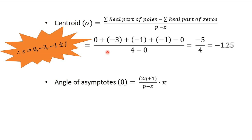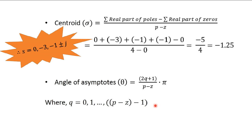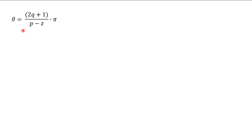Now we will find the angle of asymptotes, given by θ = (2Q+1)/(P−Z) × π, where Q = 0, 1, 2, … (P−Z−1). We have P−Z = 4, so P−Z−1 = 3, meaning Q takes values 0, 1, 2, and 3.